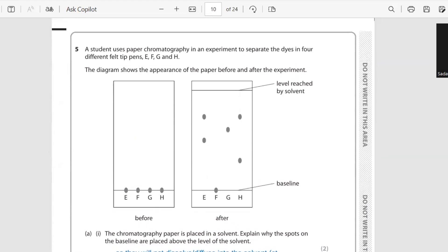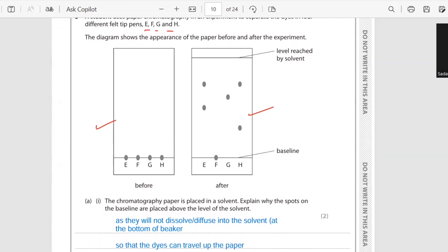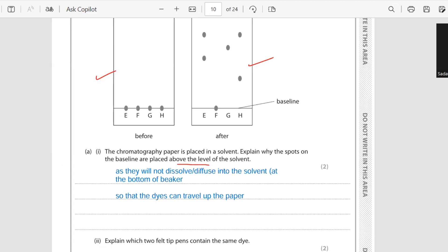Question number five: a student uses paper chromatography in an experiment to separate the dyes in four different felt tip pens E, F, G, and H. The diagram shows the appearance of paper before and after the experiment. This is before and after - it is called a chromatogram. The chromatographic paper is placed in a solvent. Explain why the spots on the baseline are placed above the level of the solvent. The reason is that it should not be dissolved into the solvent, so that they will not dissolve in the solvent and so that the dyes can travel up the paper.